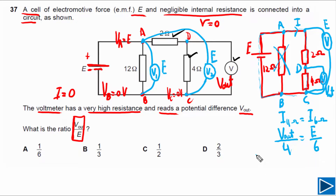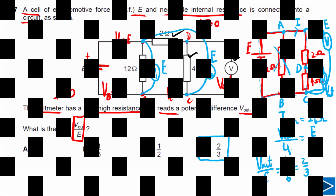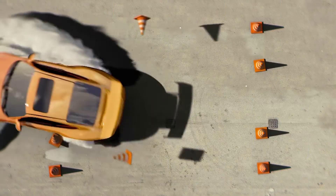We can find the ratio between Vout and E: Vout over E equals 4 divided by 6, which simplifies to 2 over 3. So our final answer is 2/3.